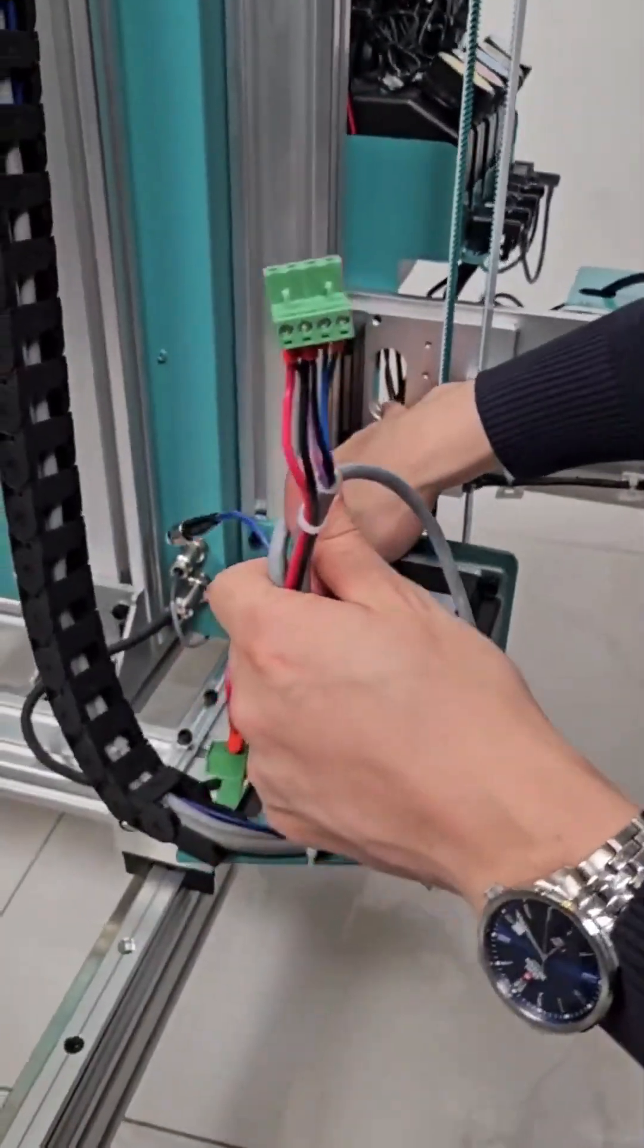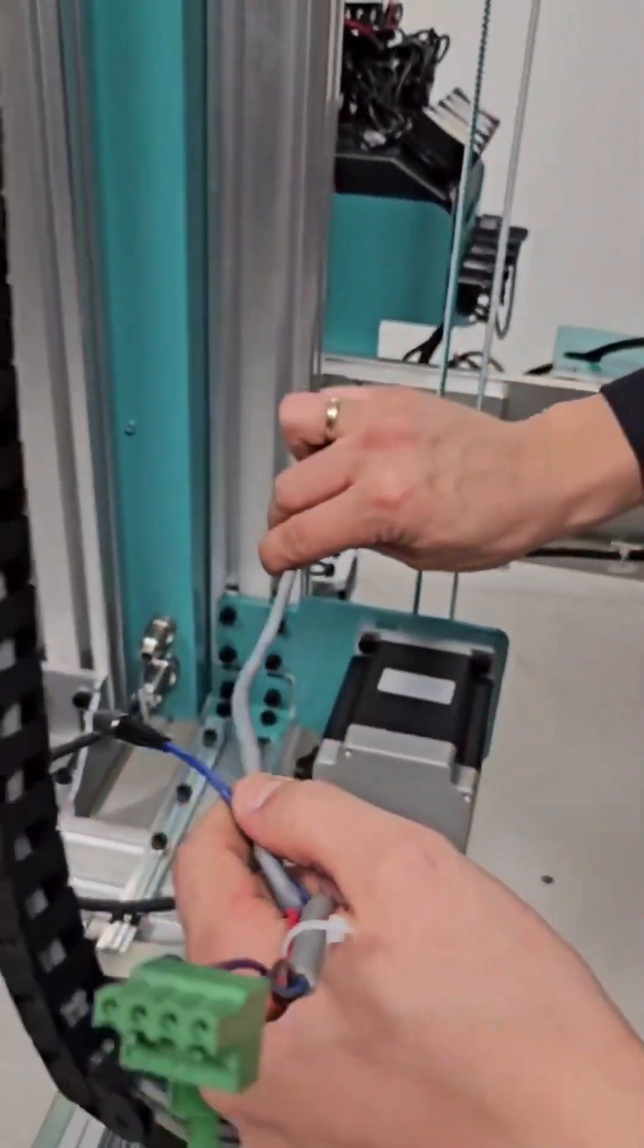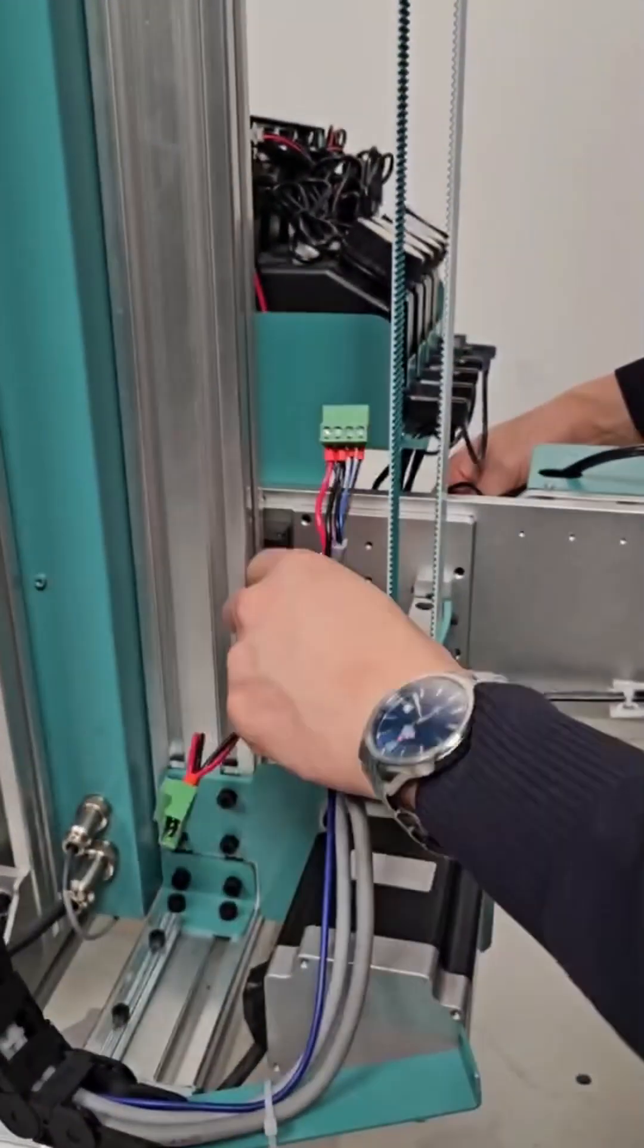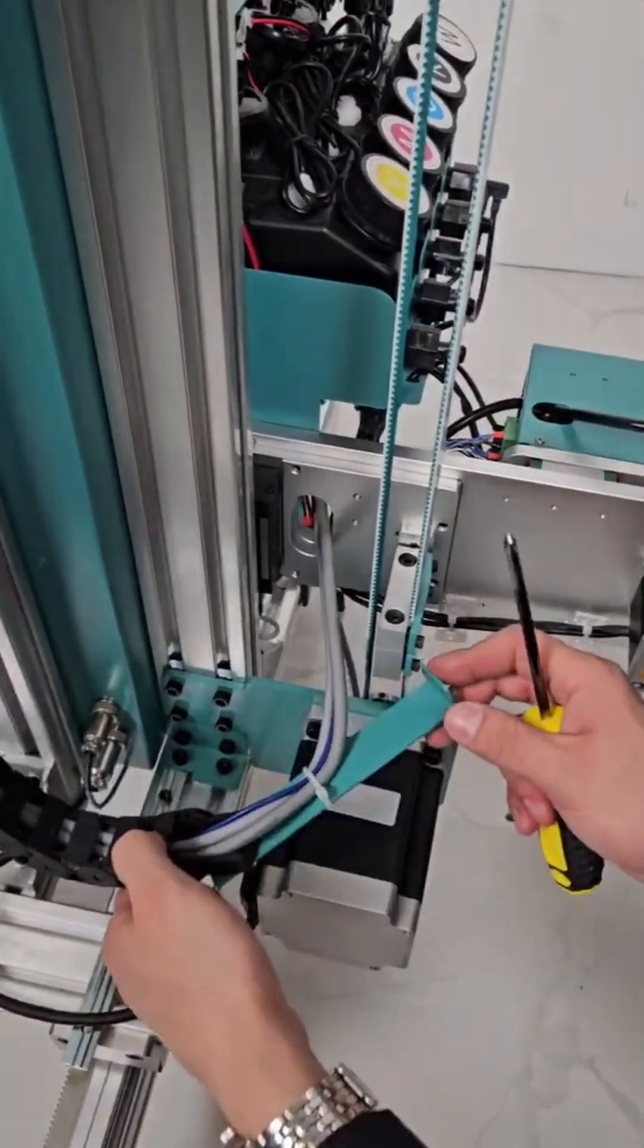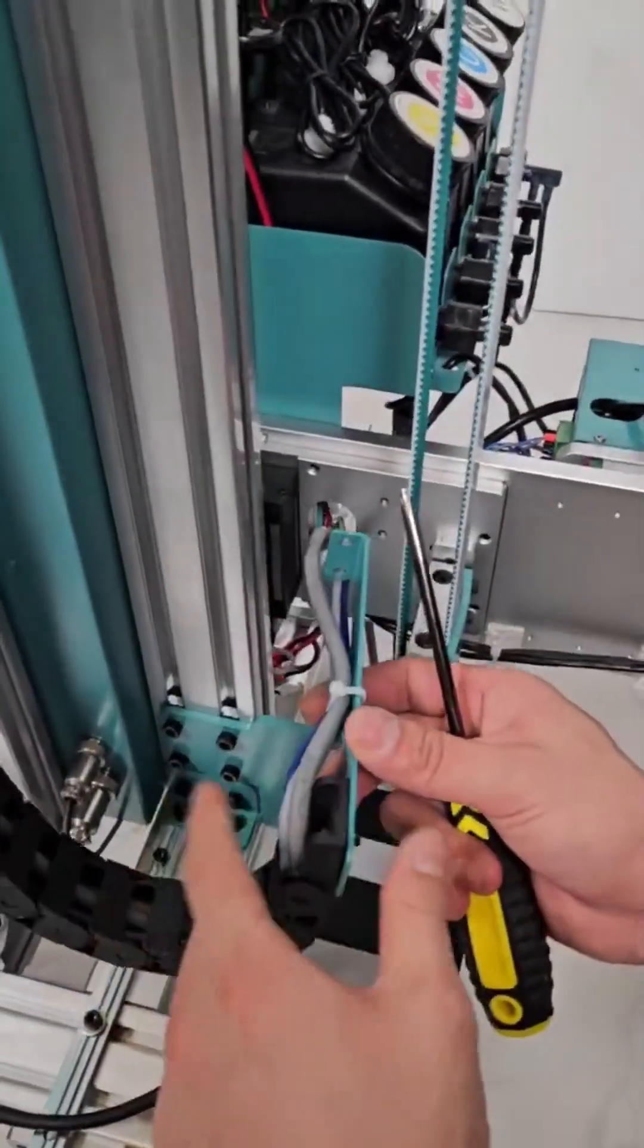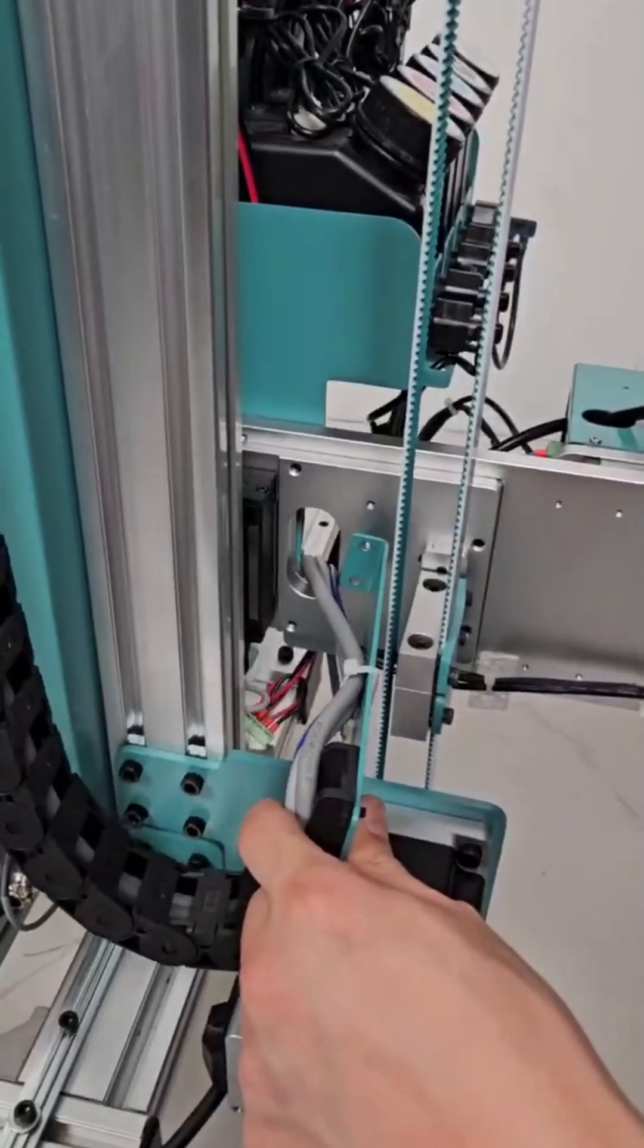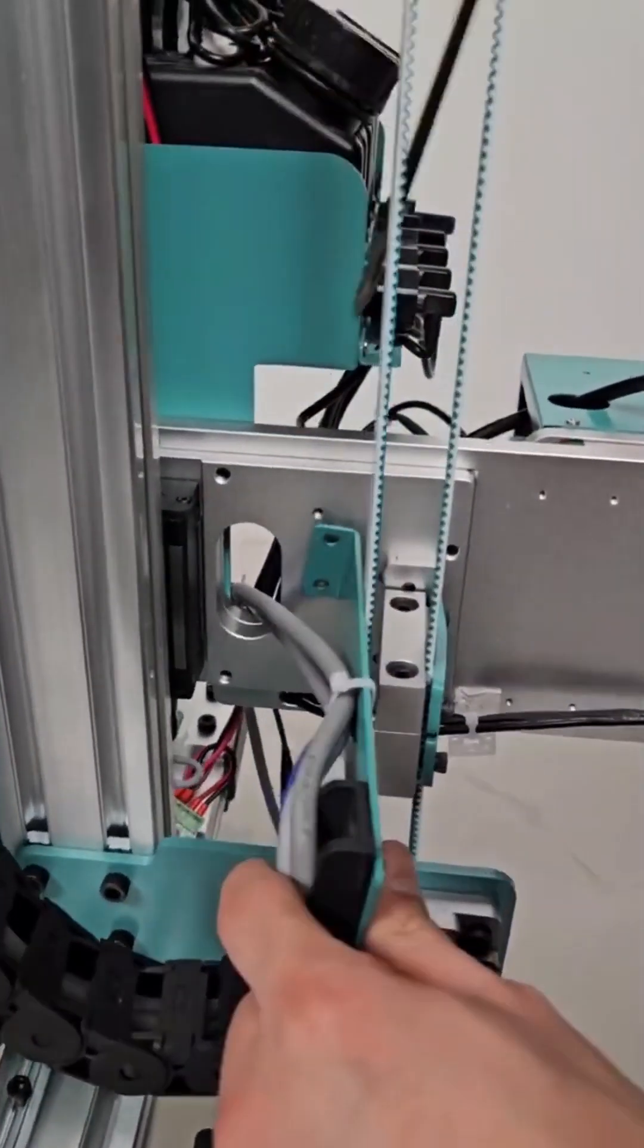Now we will start connecting the lower part. First of all, we will put the cable through the hole towards the printing head. Now you will need to fix the mount itself. First of all, the mount is attached here.